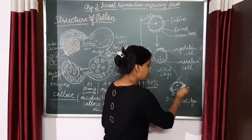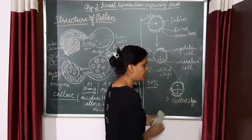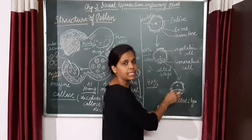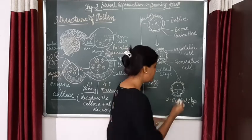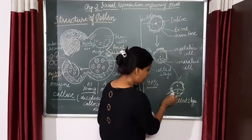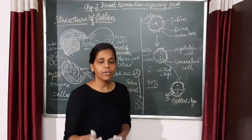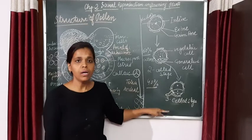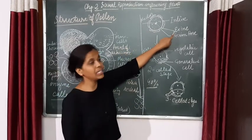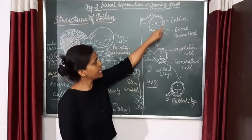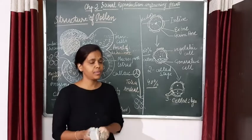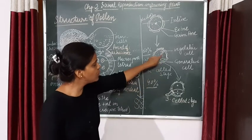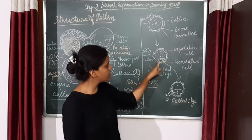At these pores, no exine is present, which means no sporopollenin is present, so the generative cell will give rise to the germ tube, or we can say the pollen tube. The pollen tube will develop, carry the male gamete, and fall on the stigma, and further reproduction will take place. So to remember: exine is a very thick layer made up of sporopollenin; intine is a thin layer made up of cellulose.